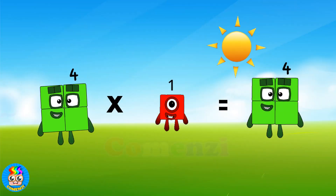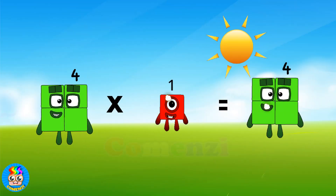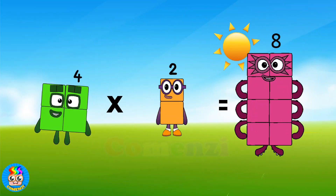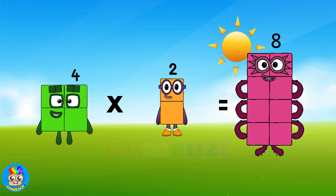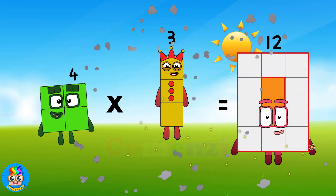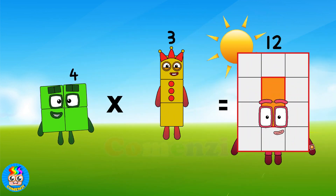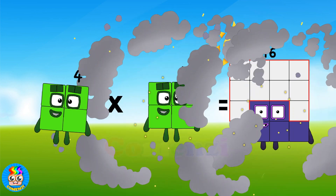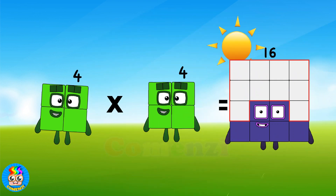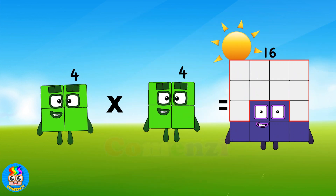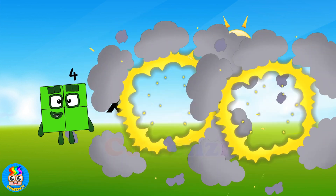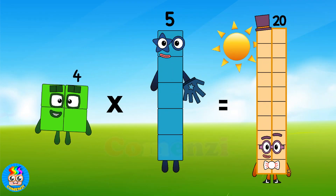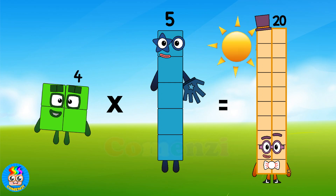Four times one is four. Four times two is eight. Four times three is twelve. Four times four is sixteen. Four times five is twenty.